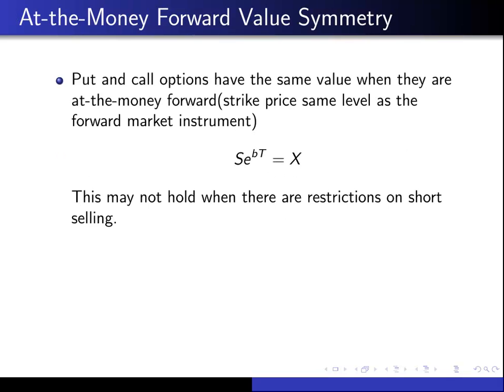We'll begin by looking at the at-the-money forward value symmetries. PUT and CALL options have the same value when they are at-the-money forward, meaning the strike price is at the same level as the forward market instrument — so the share price times e to the power of BT is equal to X. This may not hold when there are restrictions on short selling, for example — so market imperfections.